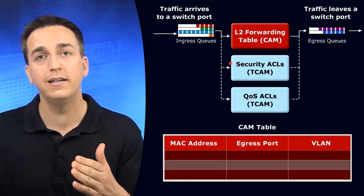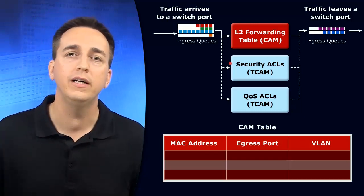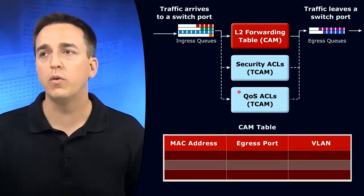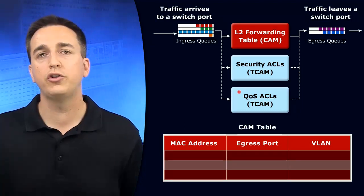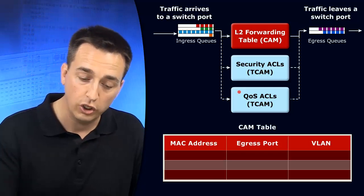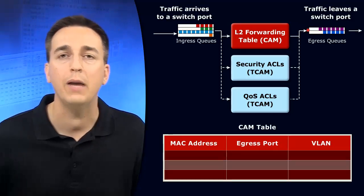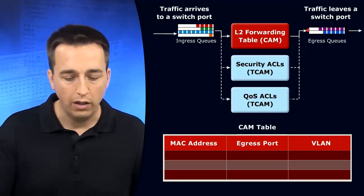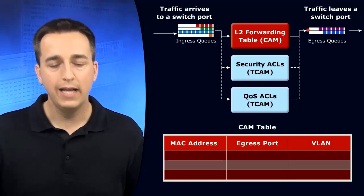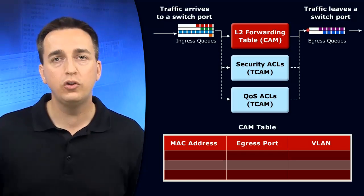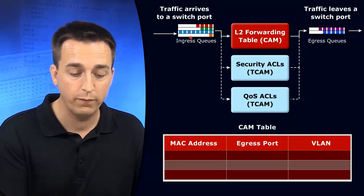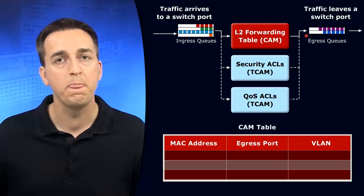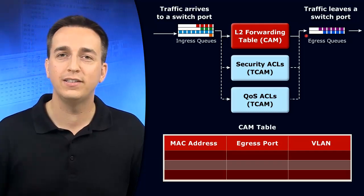We might also have quality of service markings, or we might have to do some classification on the traffic and ultimately determine what egress queue the frame is going to go into based on whether it's voice traffic or data traffic. All of these tables are going to be referenced at some point during the process of taking that frame from the ingress queue and ultimately sending it to the appropriate egress queue so it can continue on its journey to the destination device.